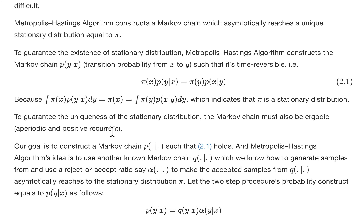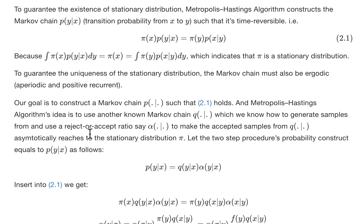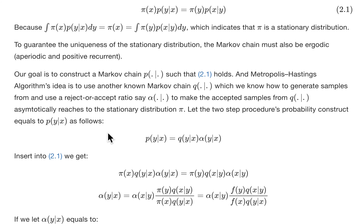So the time-reversible equation ensures the Markov chain has a stationary distribution. But we also need to make sure this stationary distribution is unique, which means we have to make sure the Markov chain we construct is ergodic. Ergodic means it's aperiodic — the period of the Markov chain is one — and it's positive recurrent. In most real-life constructions, the Markov chain will likely be aperiodic and positive recurrent, so our goal is to construct this Markov chain P accordingly.